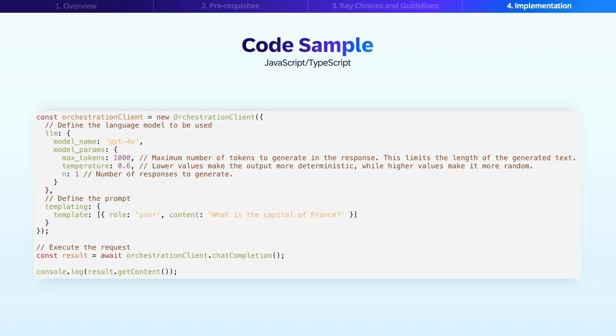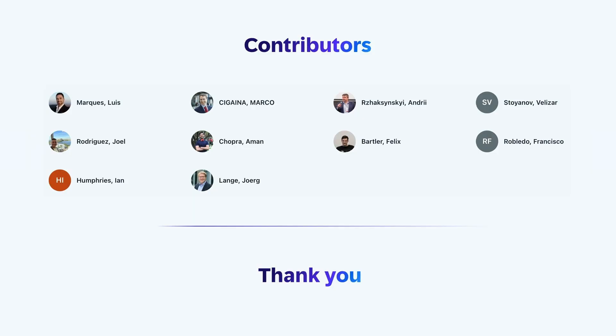This concludes our overview of accessing generative AI models using SAP AI Core. We covered the benefits of using BTP AI Core, architecture, prerequisites, implementation steps, decision factors, and implementation guidelines with a practical code example. This best practice guide reflects the collective expertise of SAP specialists from across SAP, bringing together insights to support your journey. Thank you for watching this session on accessing generative AI models. We hope the information provided helps you with a successful implementation of AI capabilities in your business applications.